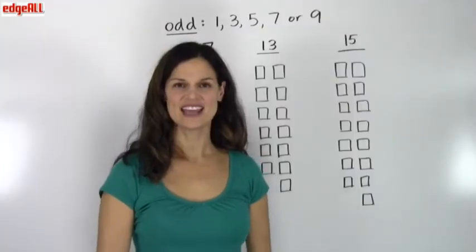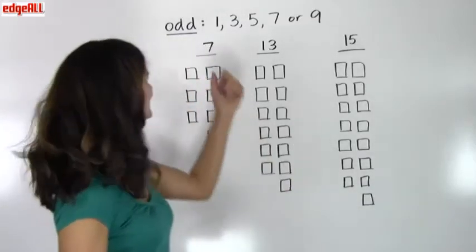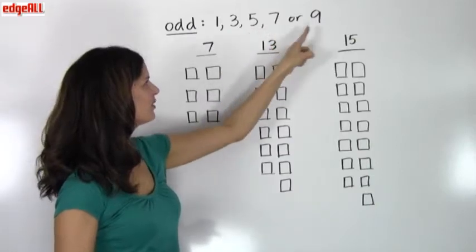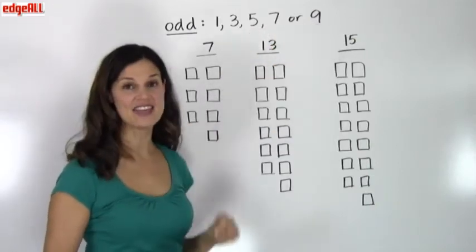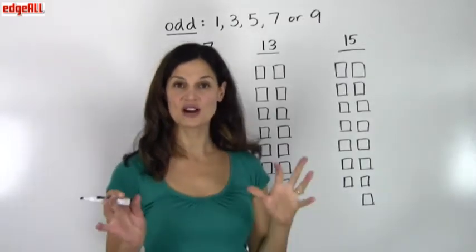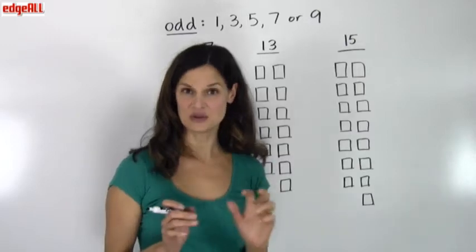Taking a look at the odd numbers, all odd numbers end in 1, 3, 5, 7, or 9. And they are never divisible by 2. If you try to group an odd number of objects in groups of 2, you will always have 1 left over.